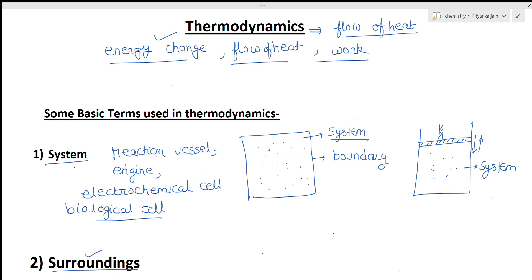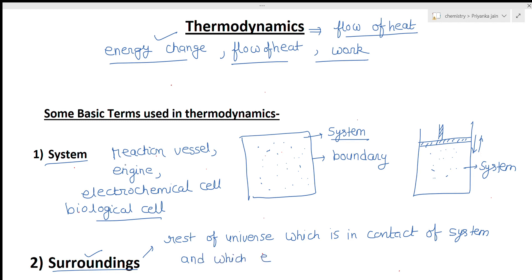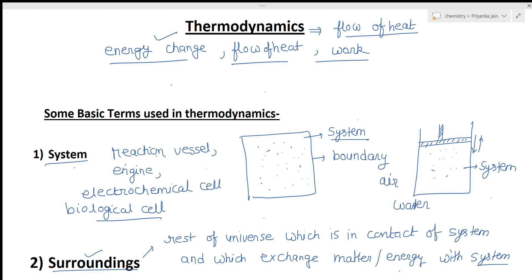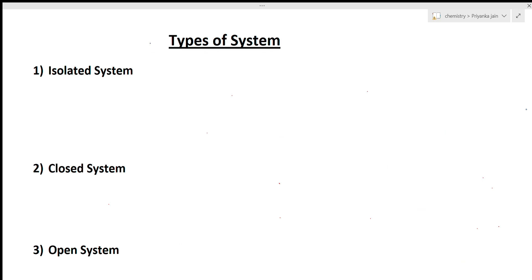Now, what is the surrounding? Surrounding means the rest of the universe — the rest part of the universe which is in contact with the system and which can exchange matter or energy with the system is called the surrounding. The surrounding may be air around it or water around it; anything can be a surrounding.